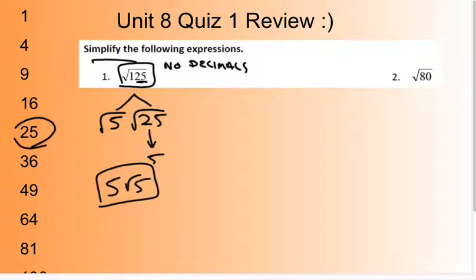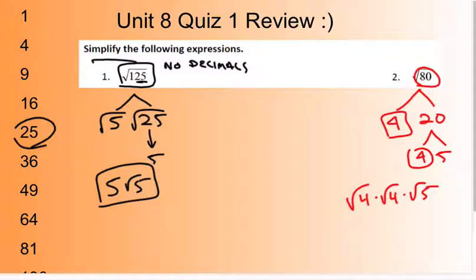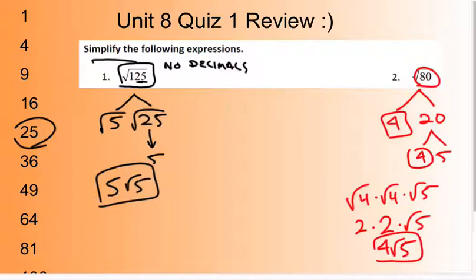Number two: square root of 80. Anytime I split apart 80, I can do that into 4 and 20. I like 4 because it's a nice easy perfect square. But then I've also got to split up 20 into 4 and 5. So this is square root of 4 times square root of 4 times square root of 5, which is 2 times 2 times square root of 5 — that's 4 square root of 5.